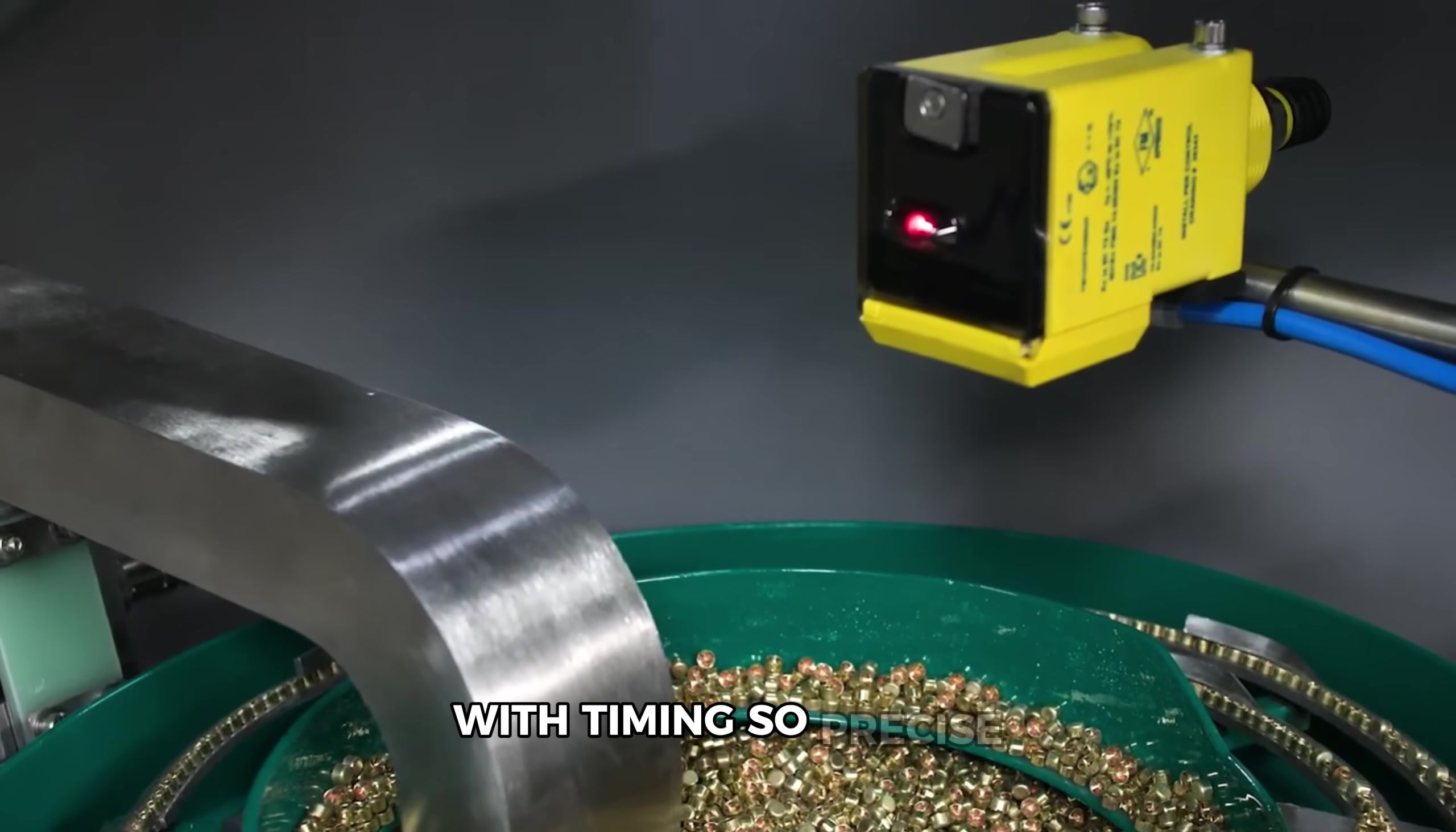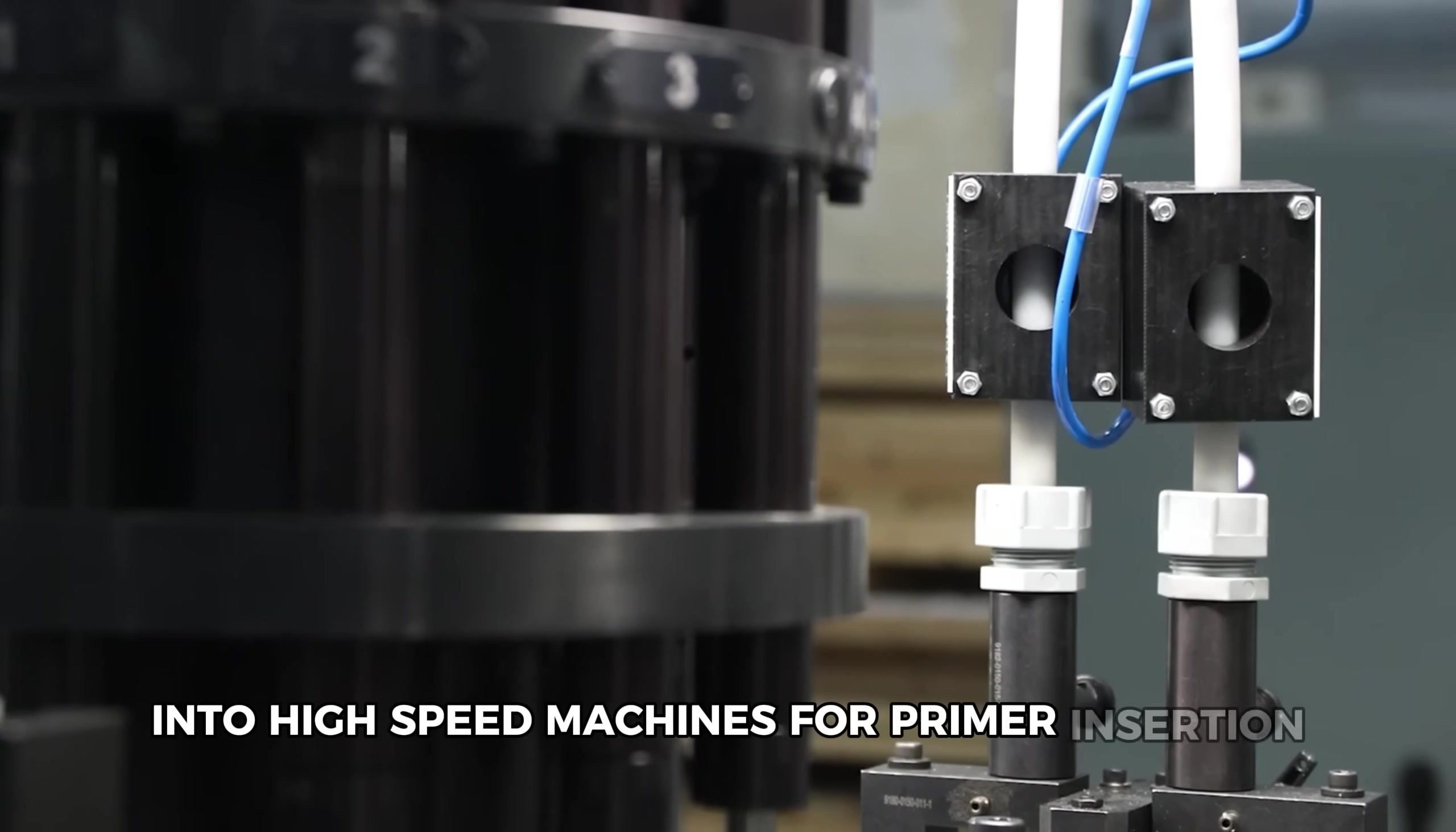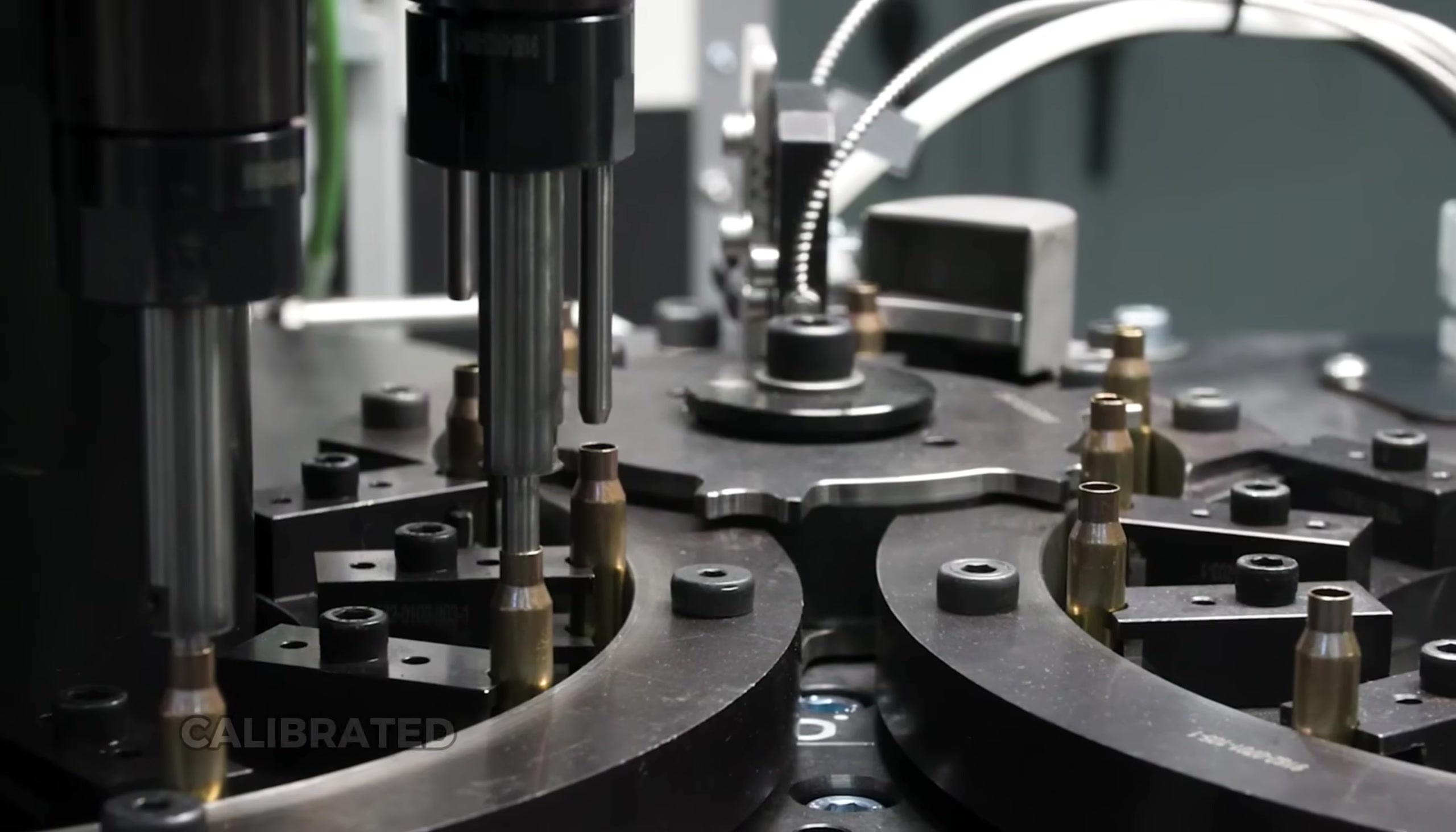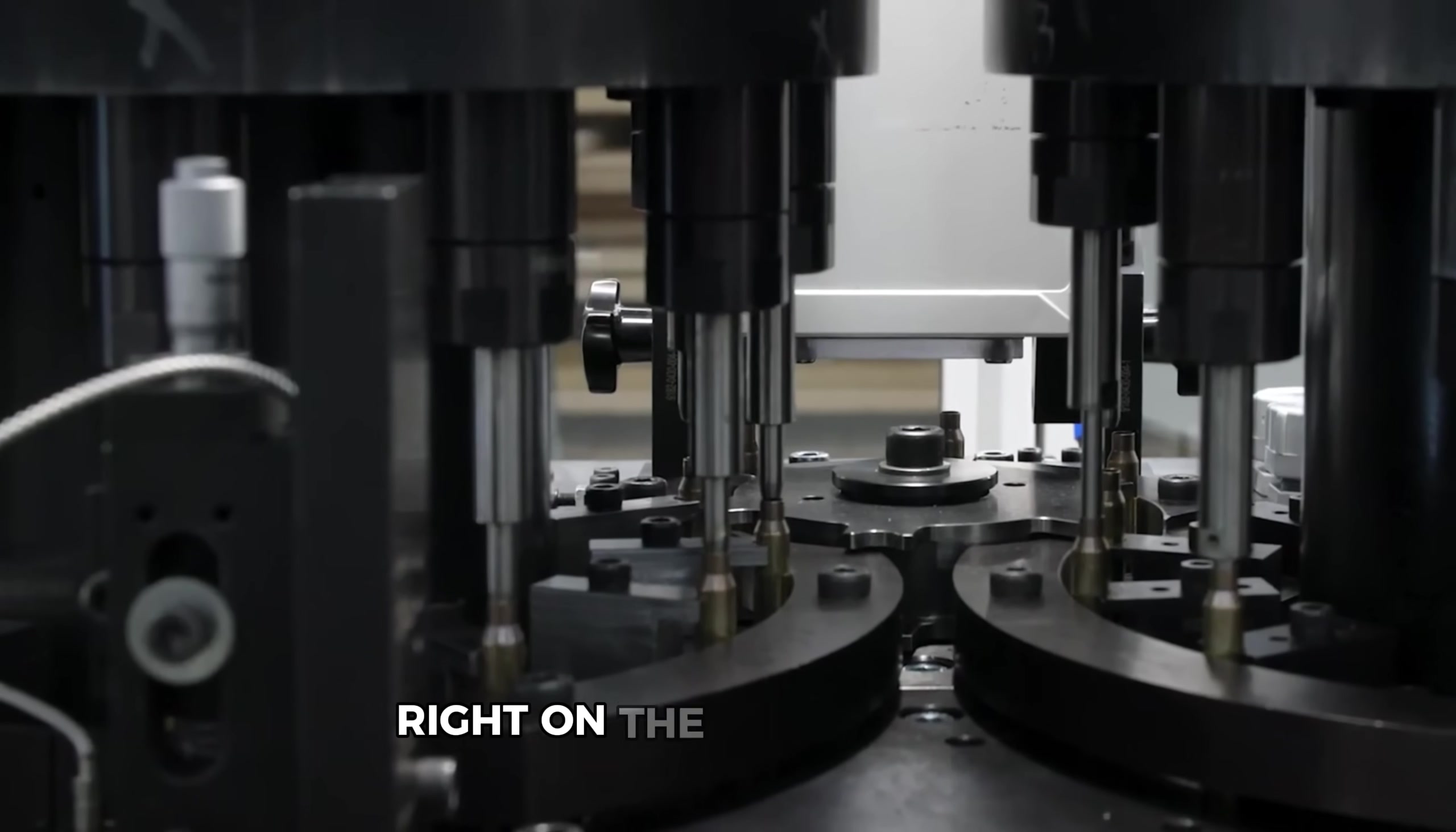Look at how these cases are being loaded into high-speed machines for primer insertion. The machinery applies exactly the right amount of pressure, calibrated to within fractions of an ounce. This precision is crucial because applying excessive force could detonate the primers right on the assembly line.